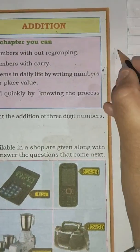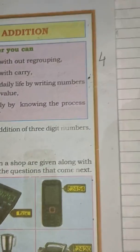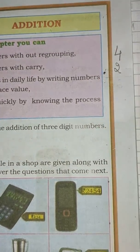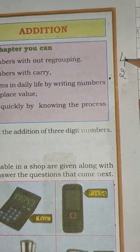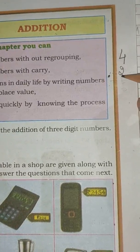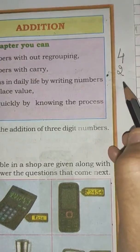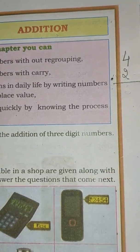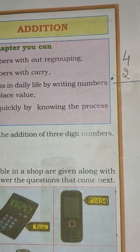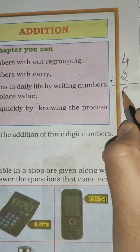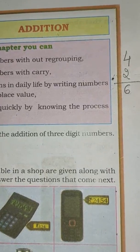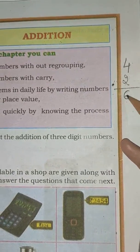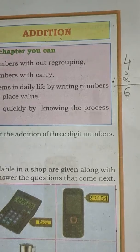Suppose you are having 4 chocolates with you. Now I am giving you 2 chocolates. Already you are having 4 chocolates, and now I am giving you 2 more. Totally how many chocolates do you have? Yes, you will have 6 chocolates. So what we have done here? We added the chocolates. So this is called addition.